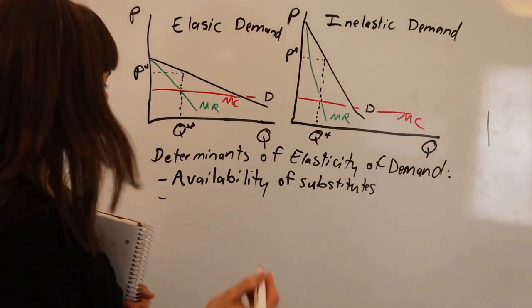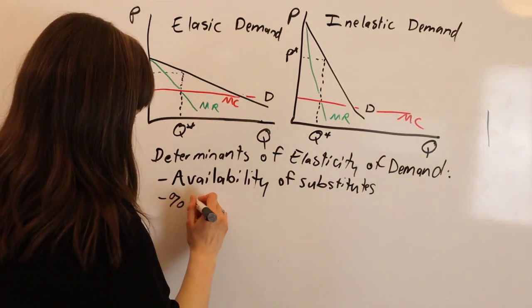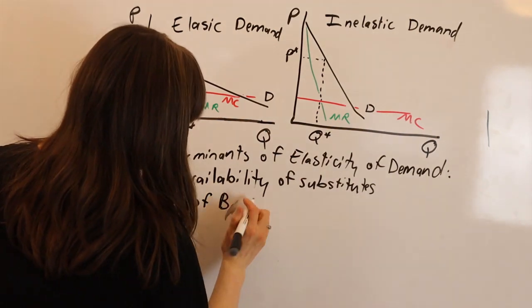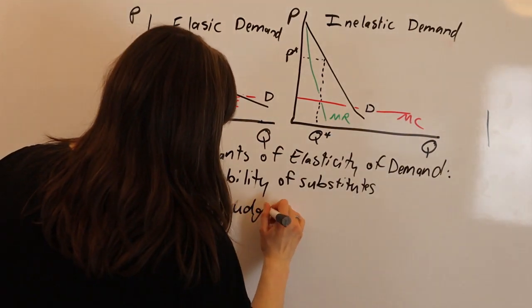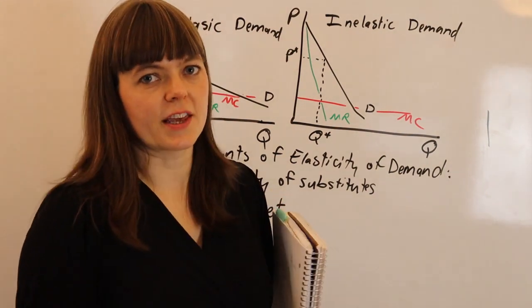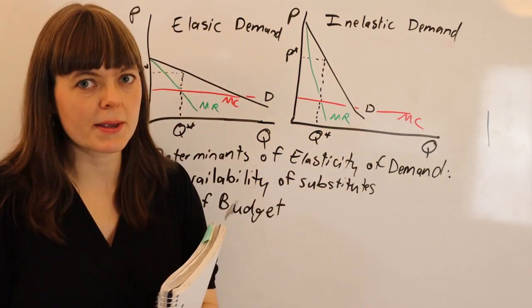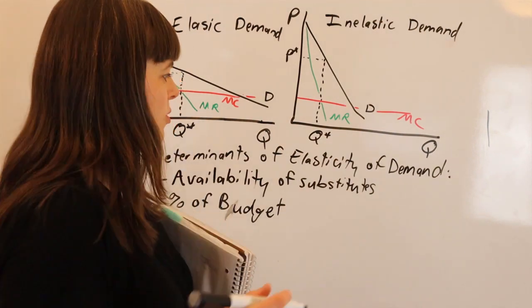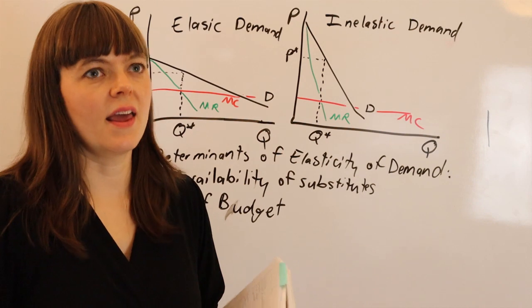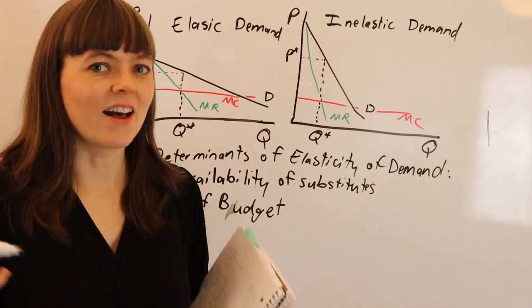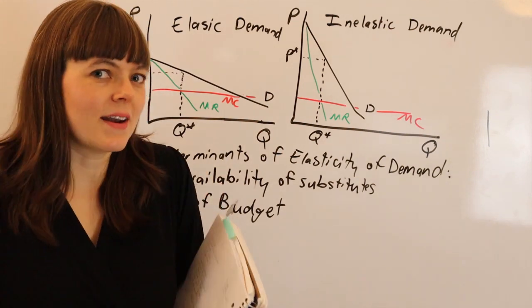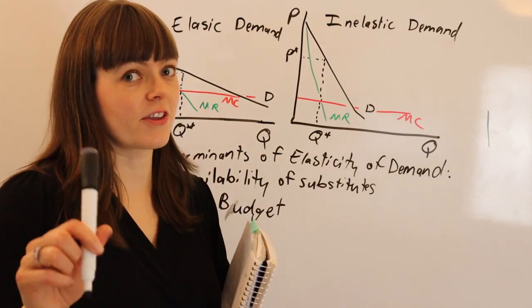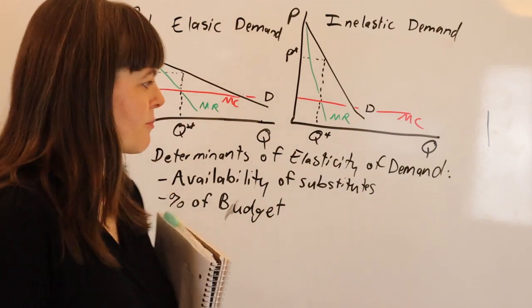We also have the percent of your budget. If you have a low percent of your budget, then people aren't going to notice a price increase, but for really high-priced items like cars and houses and swimming pools, people are going to notice a lot when you increase the price, whereas things like gum and nail clippers, things that are really cheap, you might not notice if there was a 50% price increase, whereas you would notice if the car you're about to buy had a 50% price increase.